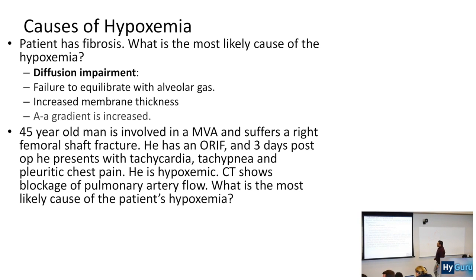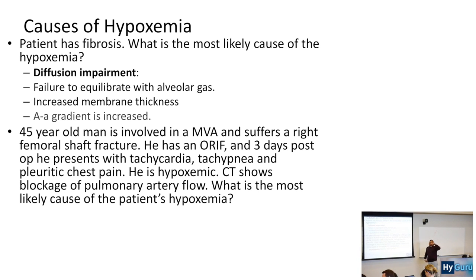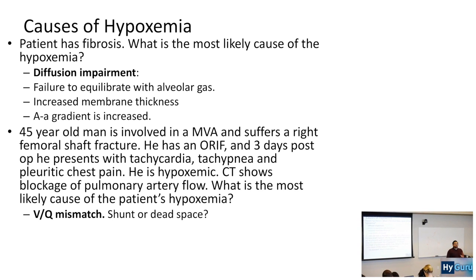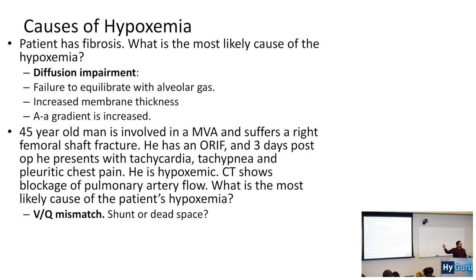What is the most likely cause of this patient's hypoxemia? This is going to be a fat embolism — you had a fracture and now you have hypoxemia. The most important cause of hypoxemia is VQ mismatch, and one step further, it causes an increase in the A-a gradient. Now what are the extremes of VQ mismatch? You've probably learned this: shunt and dead space.